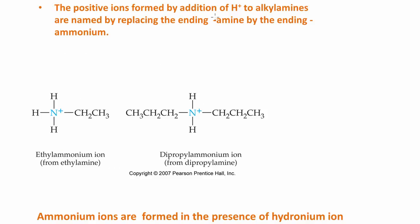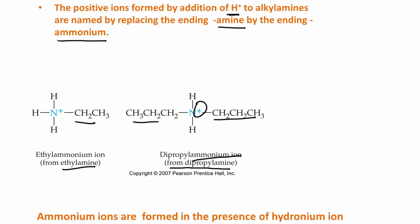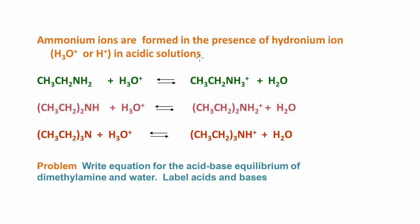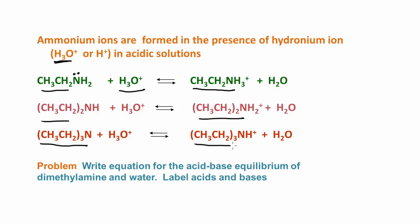The positive ions that are formed when we add a proton to an alkyl amine are named by replacing the ending -amine with -ammonium. So here we have the ethylammonium ion, from ethylamine. This has two propyl groups — the dipropylammonium ion, which has a positive charge, from dipropylamine. Ammonium ions are also formed in the presence of hydronium ion, or by the addition of a proton through that lone pair of electrons. So here again, we have ethylamine with acid to produce the ethylammonium ion, diethylamine to produce the diethylammonium ion, and triethylamine to produce the triethylammonium ion.